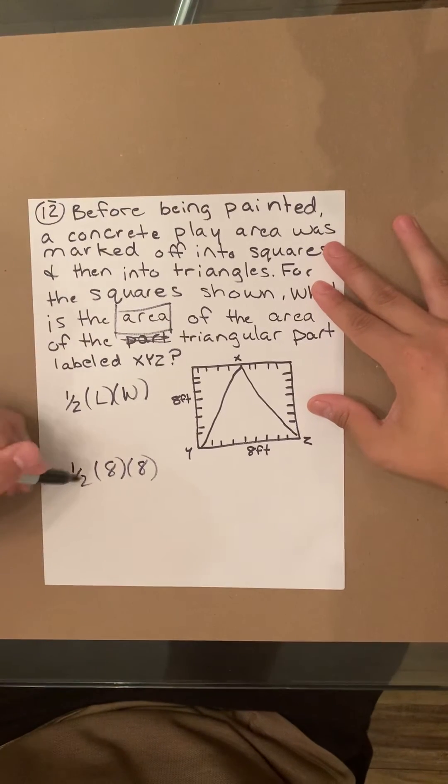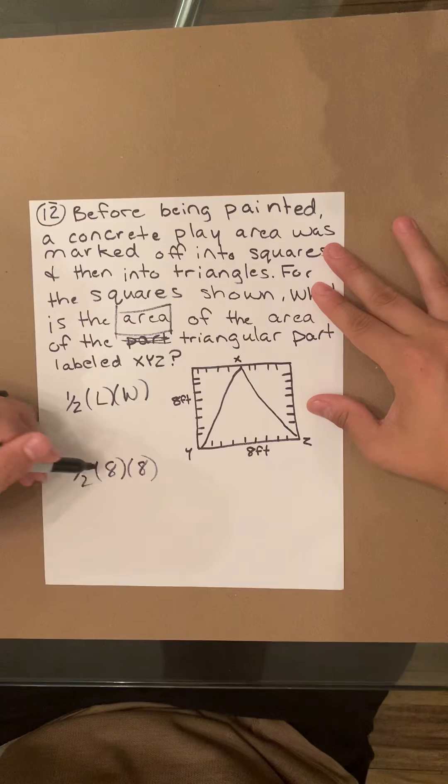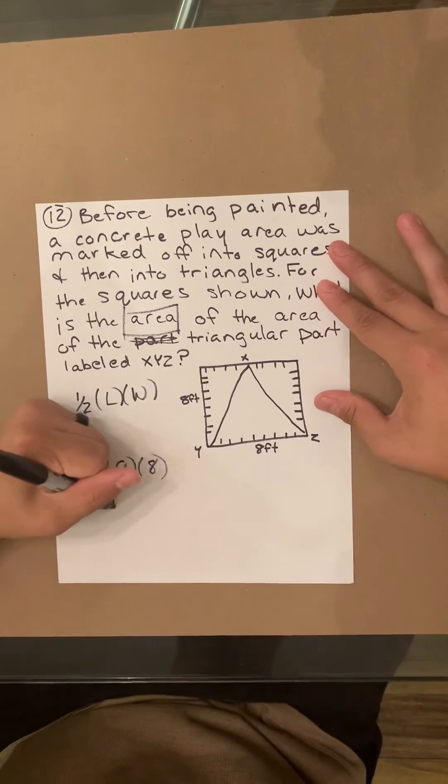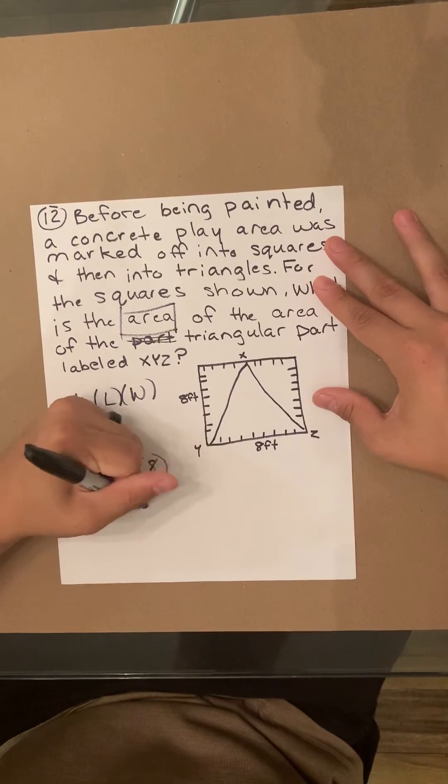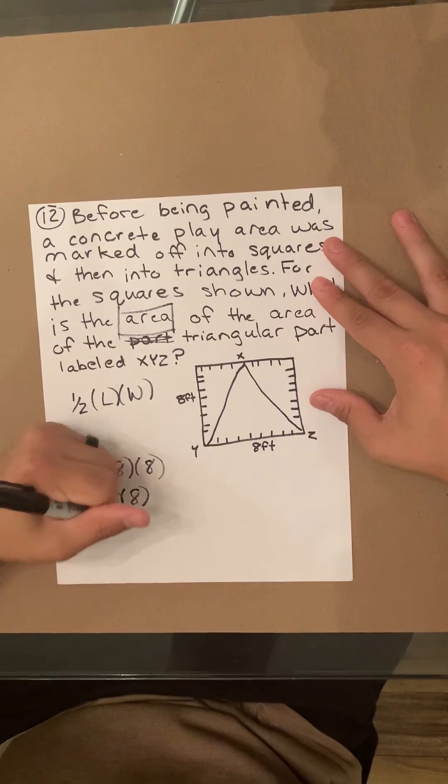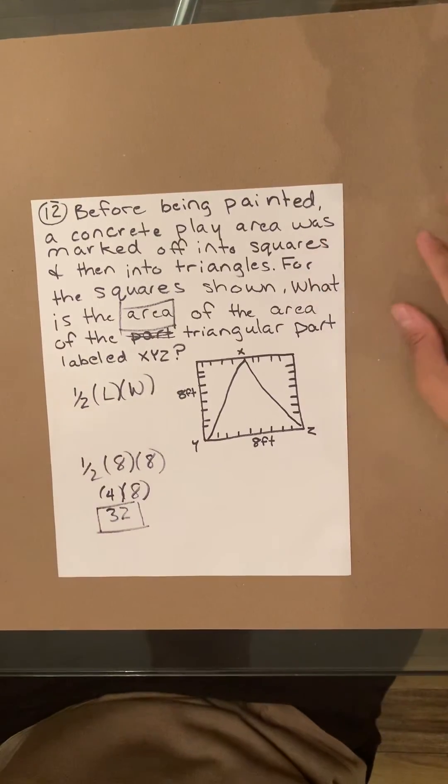When you are doing it by half, though, that just basically makes it division. So two divided by eight equals four. Four times eight equals 32. That's exactly what your answer is.